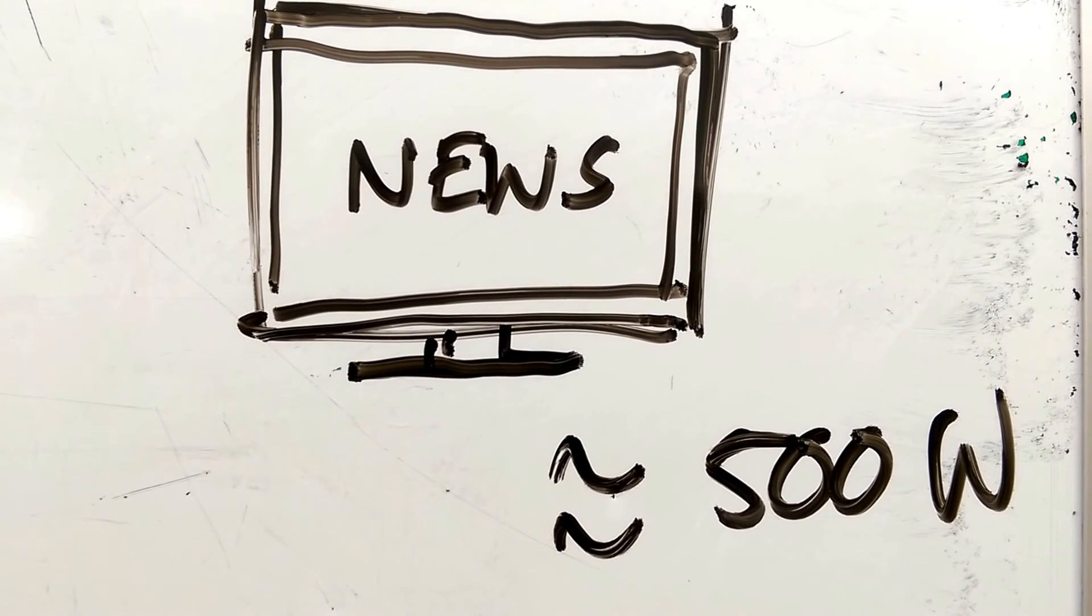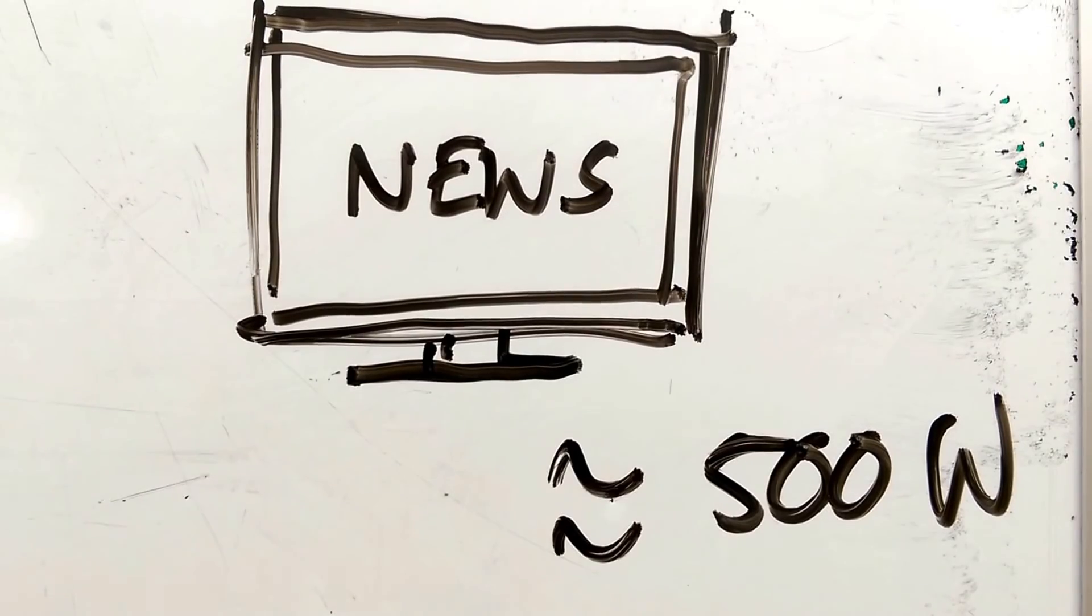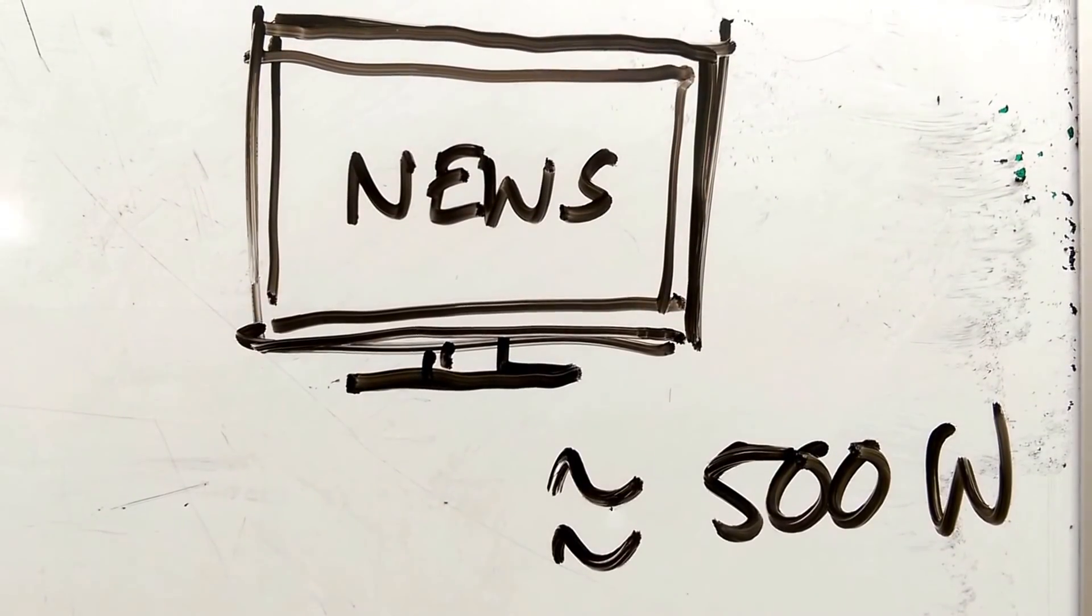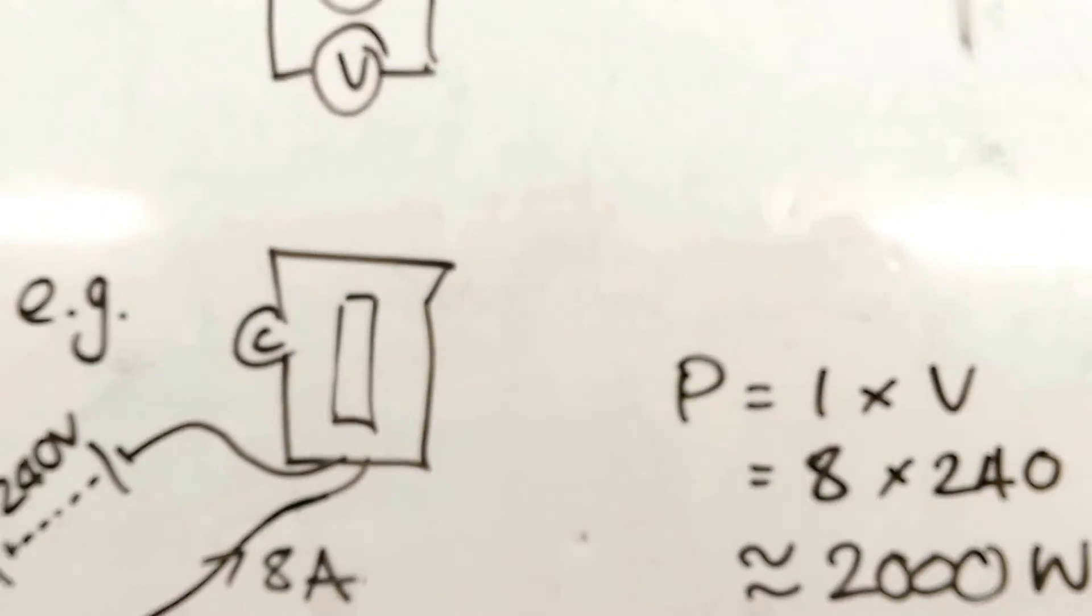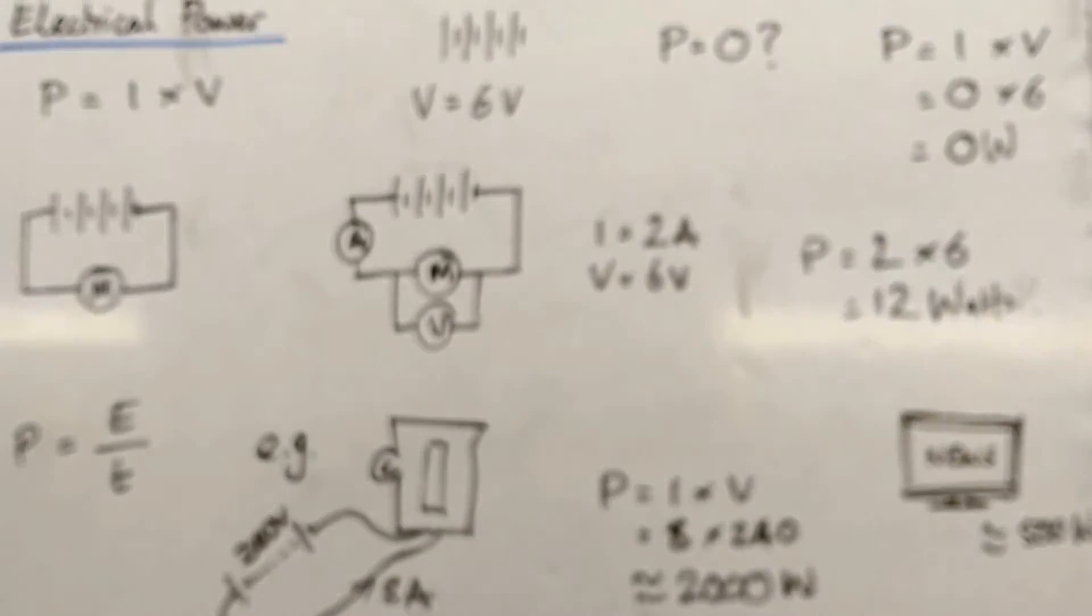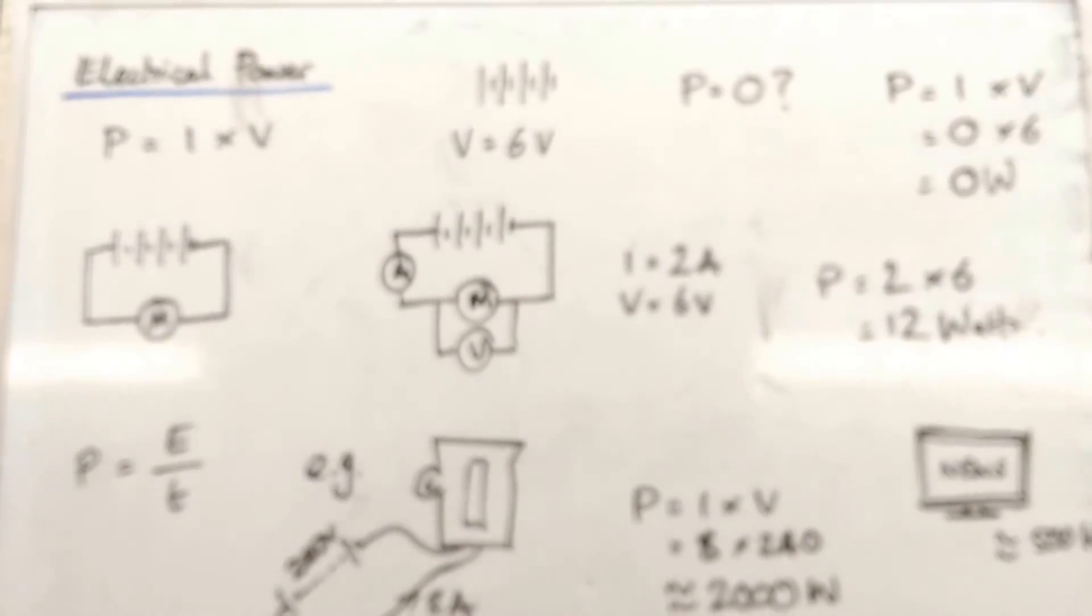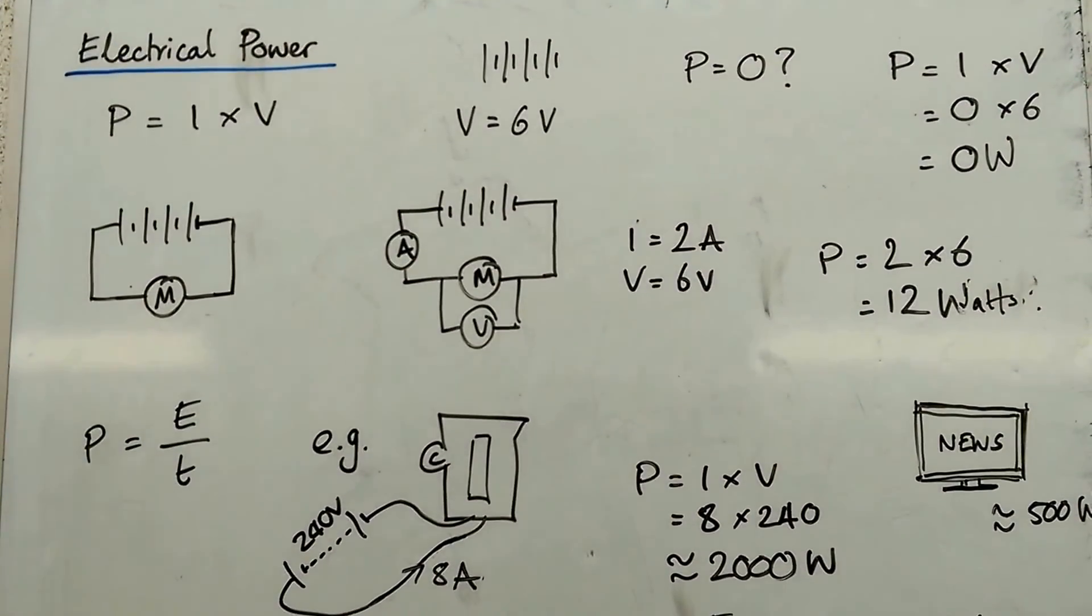And your TV, even though it's quite a big appliance, it's only about 500 watts. But hang on a minute, you're going to leave it on for a lot longer time than your kettle, so you're going to be using a similar amount of energy overall.